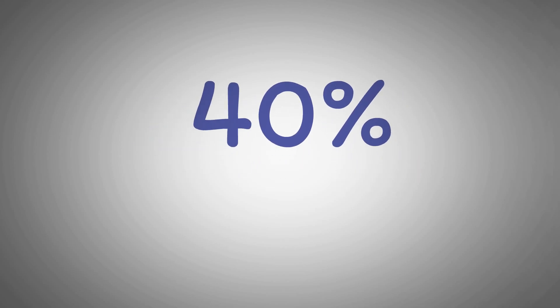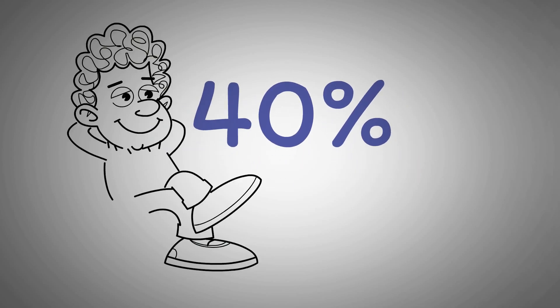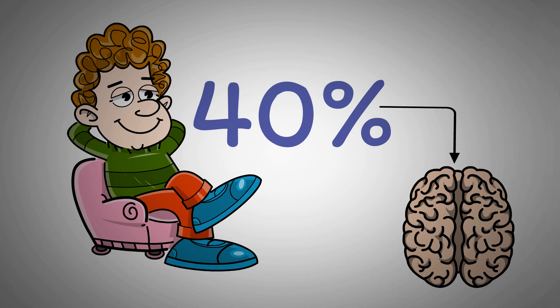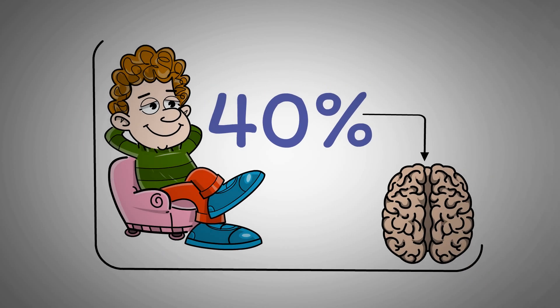Studies show that up to 40% of our happiness is determined not by our external circumstances, but by our daily activities and the habitual workings of our brain. What if you could change that percentage by rewiring your brain for joy?